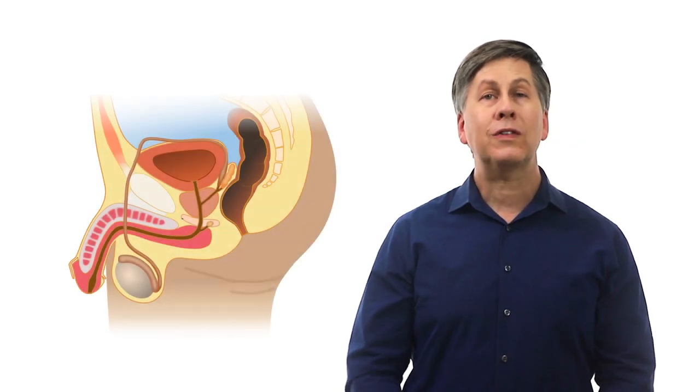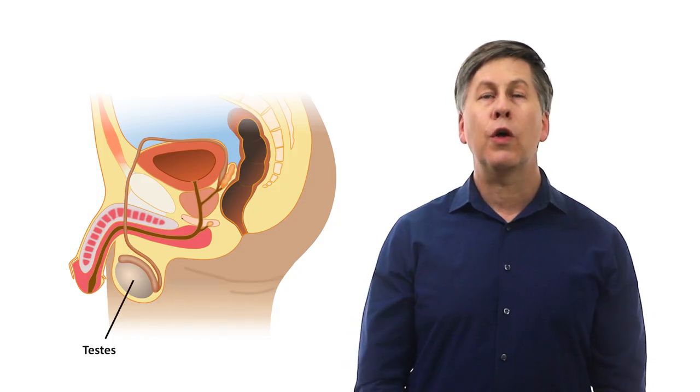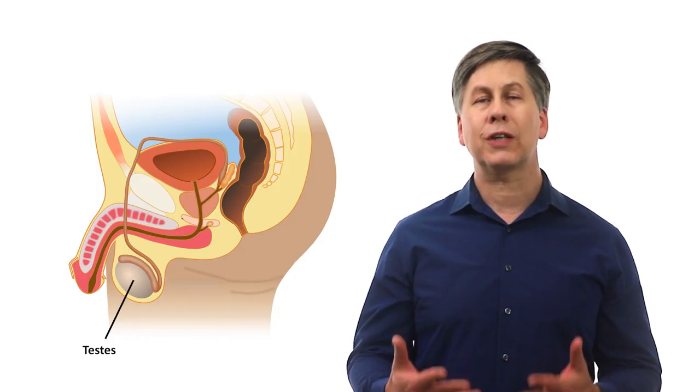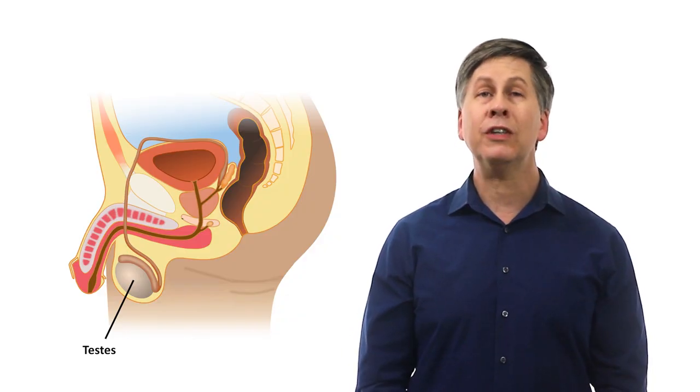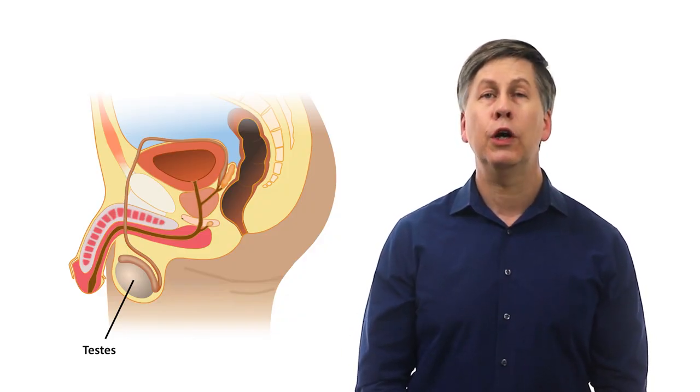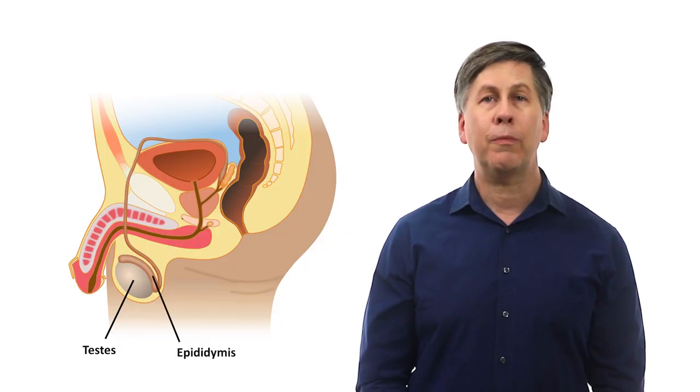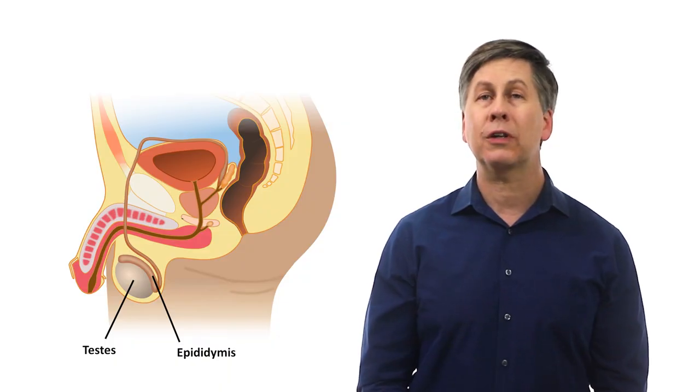In addition to the reproductive hormones, male fertility is also dependent on anatomy. Once the testes produce spermatozoa, those spermatozoa need to mature and be stored until they are released during sexual intercourse. The storage and maturation of spermatozoa predominantly occurs in the epididymis located within the scrotum on the posterior superior aspect of the testes.